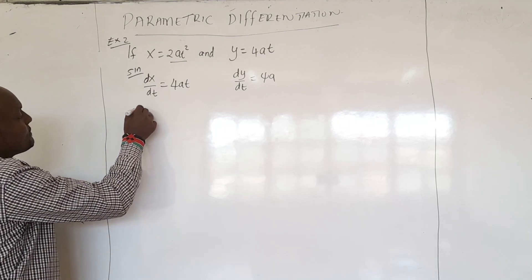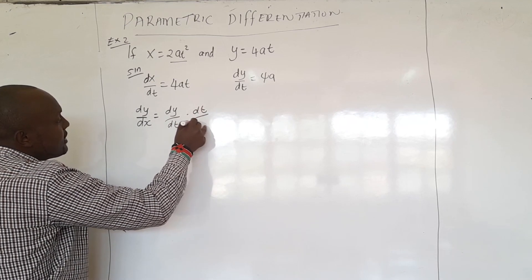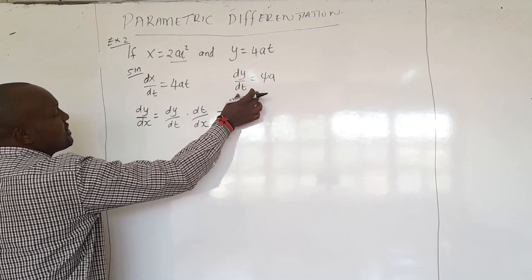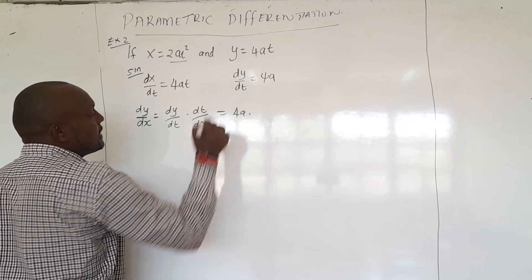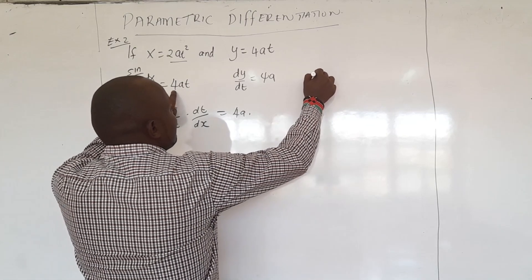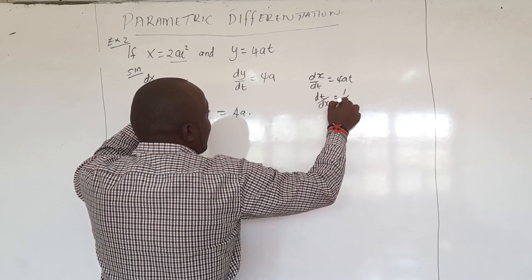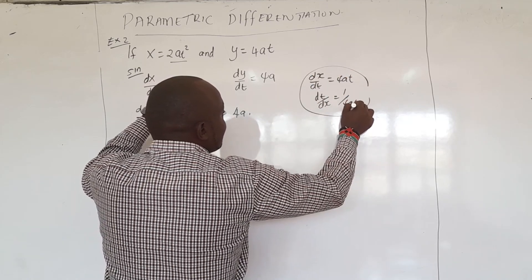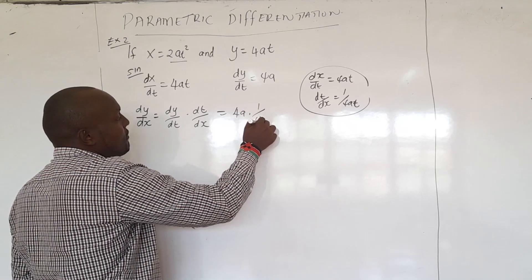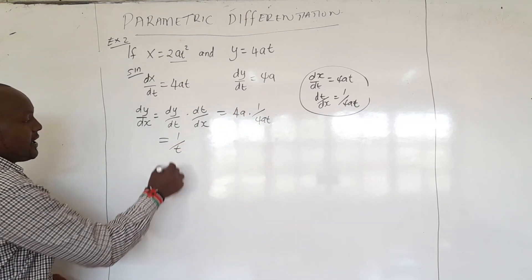To get dy/dx, we use dy/dt times dt/dx. Our dy/dt is 4a. For dt/dx, we take the reciprocal of dx/dt: since dx/dt was 4at, dt/dx equals 1 over 4at. Every student should note that we are taking the reciprocal here. So dy/dx equals 4a times 1 over 4at, and the 4a cancels, giving dy/dx equals 1 over t. That's the first derivative.